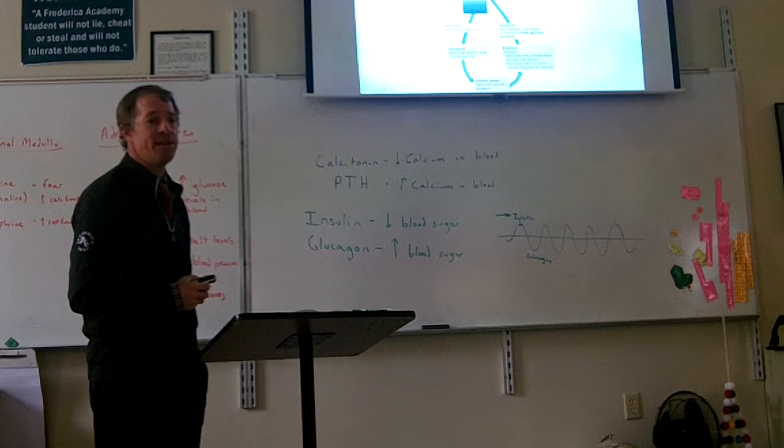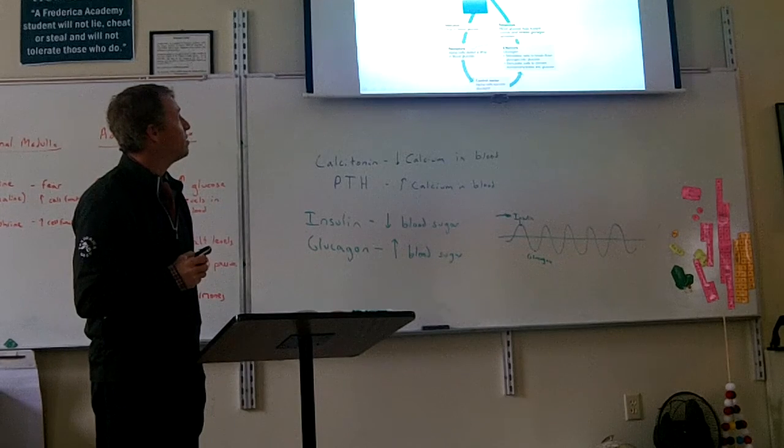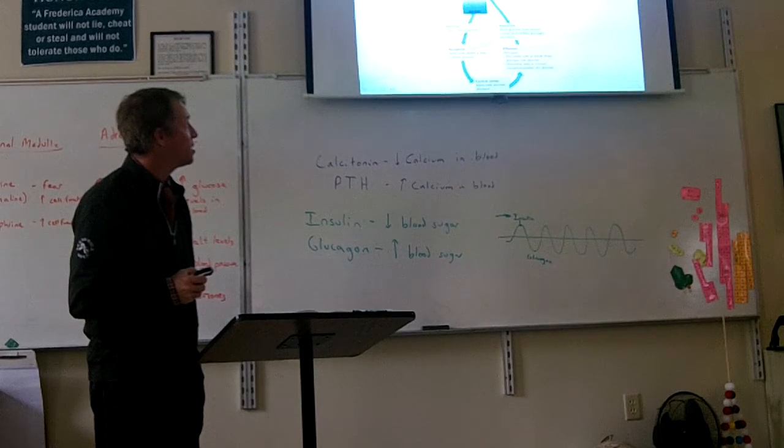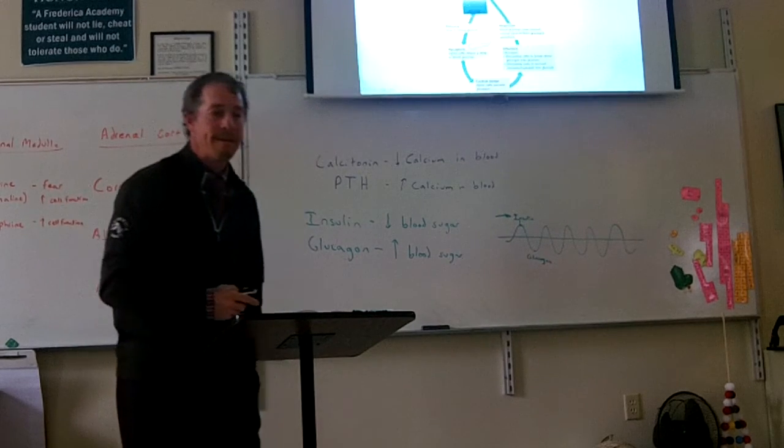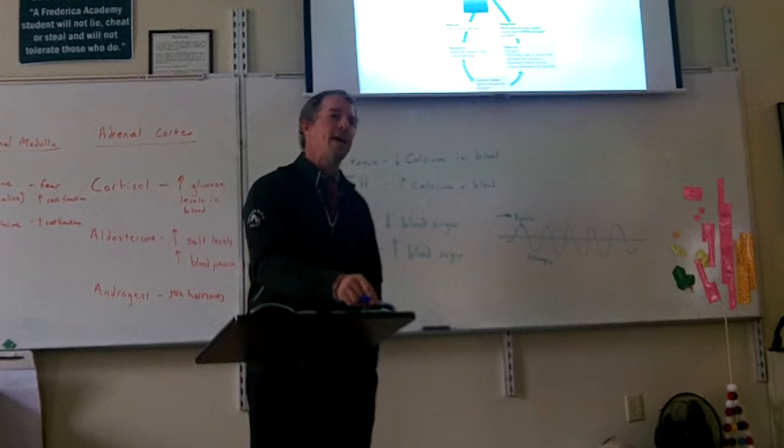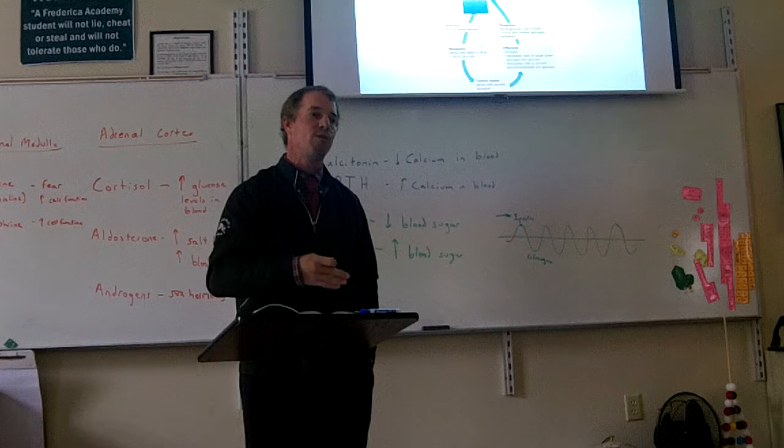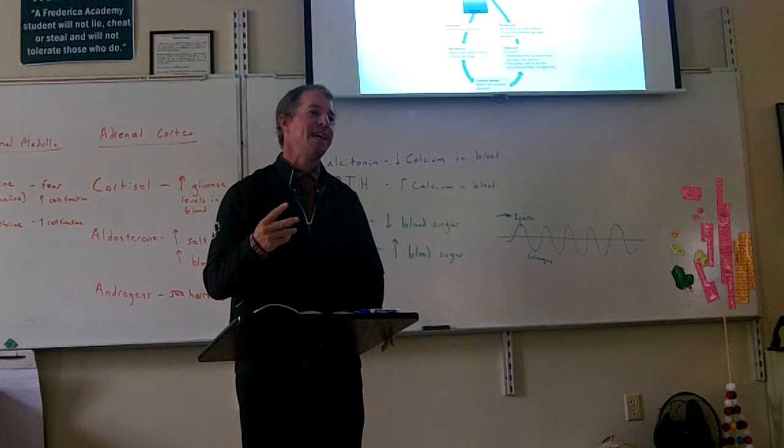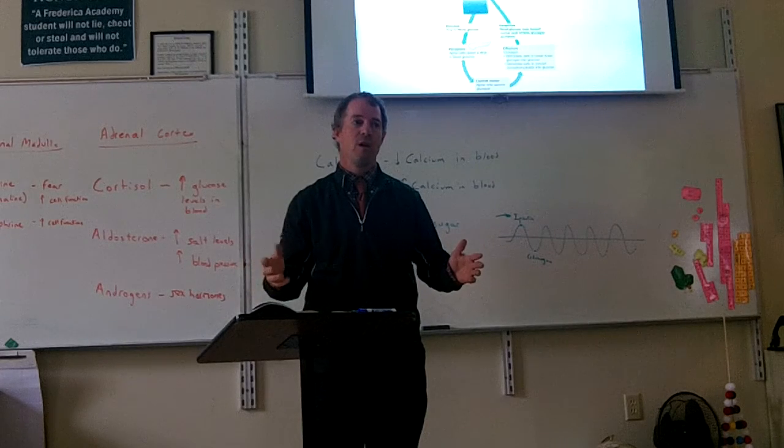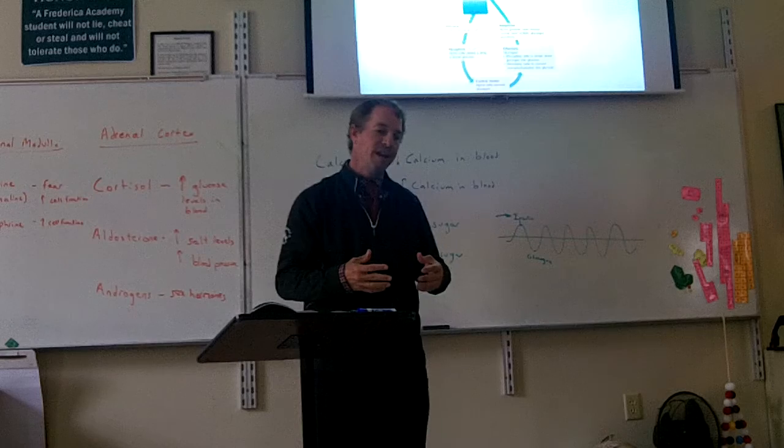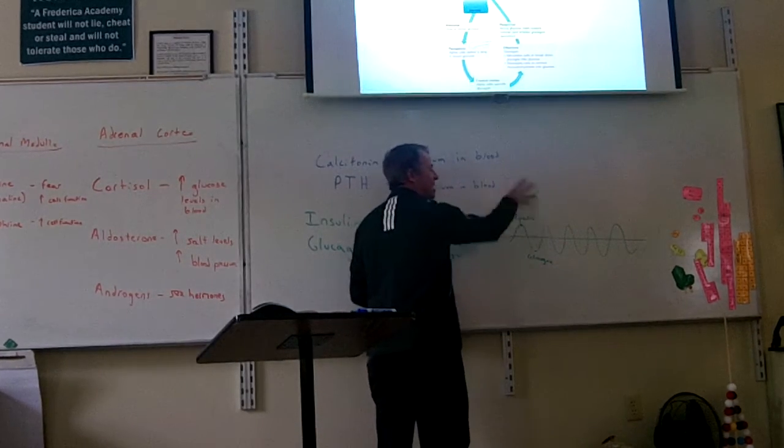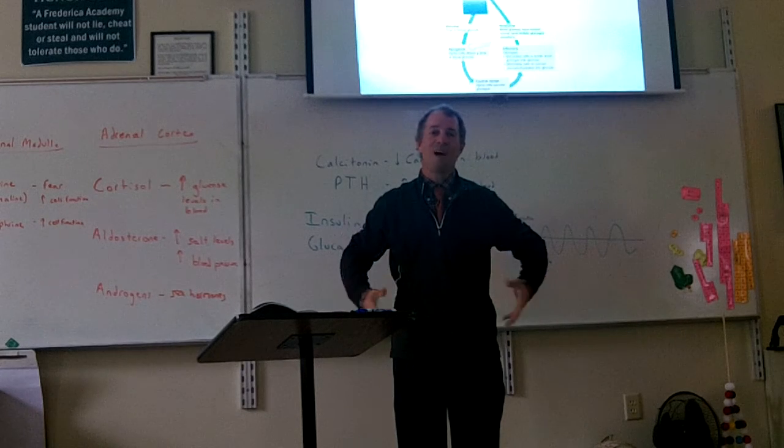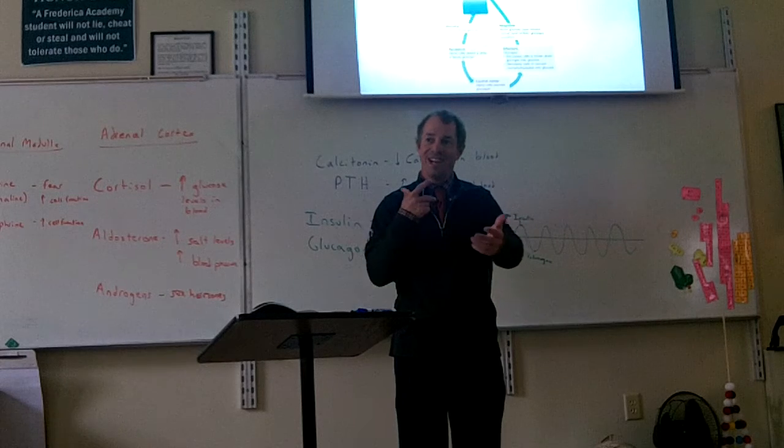And then what happens is your kidneys go, there's way too much sugar in the blood, we've got to get rid of this. And your kidneys strain all the sugar out, and you end up peeing out sugar. And the sugar that would normally be stored in your liver ends up getting peed out. As a matter of fact, the old way the doctors tested someone for diabetes is they had them pee in a cup, and then they drank the pee to see if it was sweet. That's how they used to do it. Now they use a chemical test where you dip a strip in there and it'll tell you if there's sugar. But the old days, you had to taste it. That's why you paid your doctor a lot. Here, taste this pee.